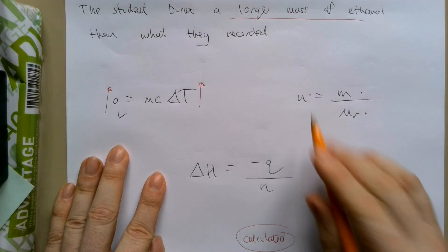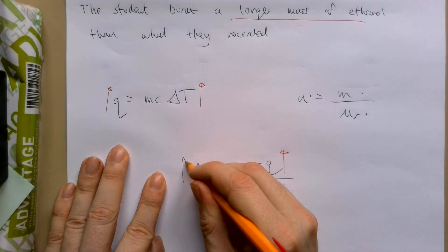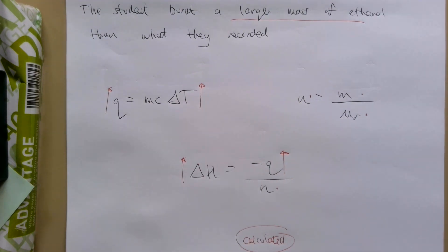So the moles that they think have stayed the same. The heat has gone up because the temperature change has gone up. Therefore, all we've done here is increase the heat. And so as far as the student's concerned, their delta H will be larger in magnitude. So as it's an exothermic reaction, it'll be more exothermic.